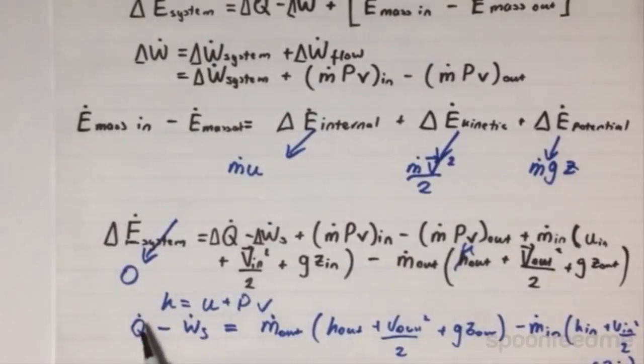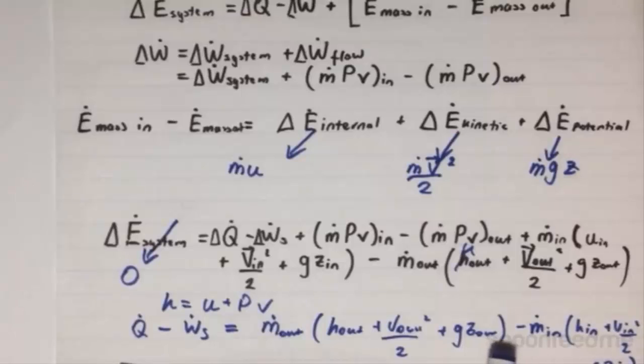We can remove the deltas before the Q and the W, just for simplicity's sake. This is the final takeaway equation from this very long derivation. Whenever we have an open system which we want to analyze, we look at this equation and we try to use it.